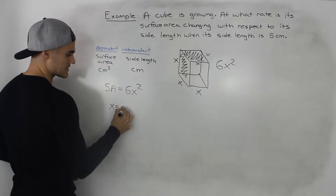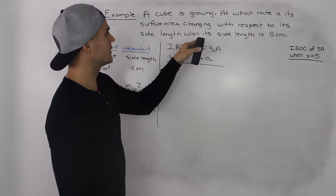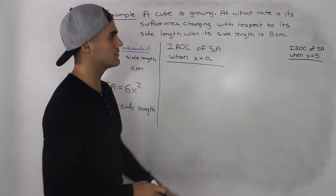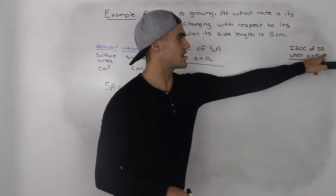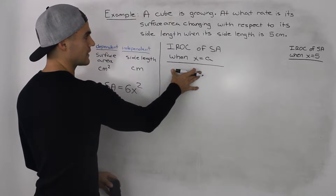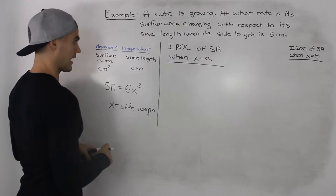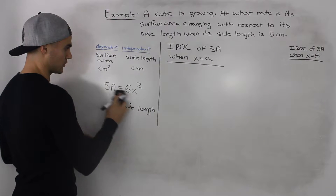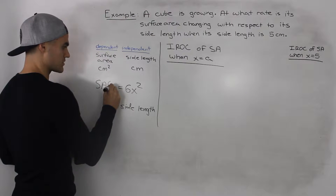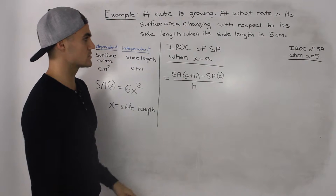Because they're asking for the rate at which the surface area is changing when the side length is at 5 centimeters, they're asking for a specific point in time. We are going to find the instantaneous rate of change of the surface area when x equals 5. But before that, let's first find the instantaneous rate of change when the side length equals some general value a. We related the variables with the equation surface area equals 6x squared, which we can also write as the surface area as a function of x.